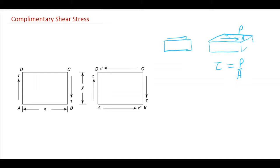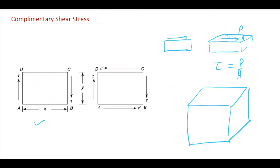Now let's start with the complementary shear stress. Consider an element ABCD. An element means any small part that we consider inside a body under different types of loading — external forces, shear forces, all forces acting. So let ABCD be a small element inside a body that is acted upon by a shear stress on areas AD and BC.